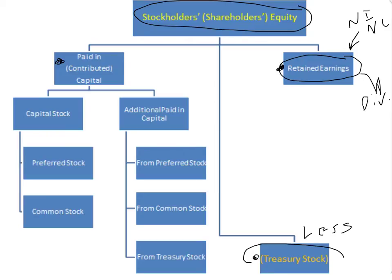If we take a look at the paid-in side of equity, it separates into two big parts: the first one is capital stock and the second one is additional paid-in capital. There are two major parts of capital stock — preferred, listed first, and common. And you can have additional paid-in capital from preferred, from common, and from treasury stock.